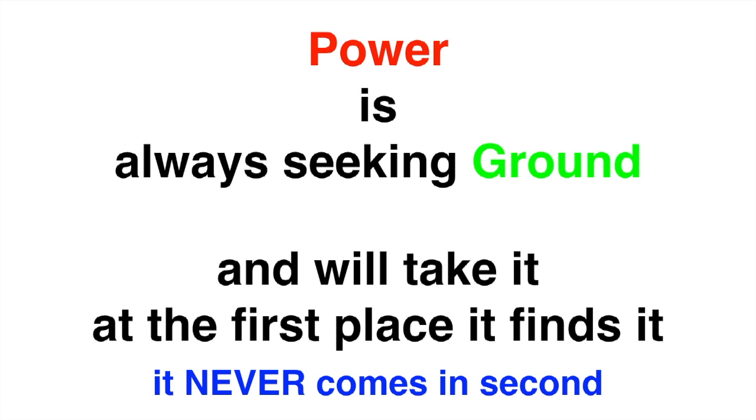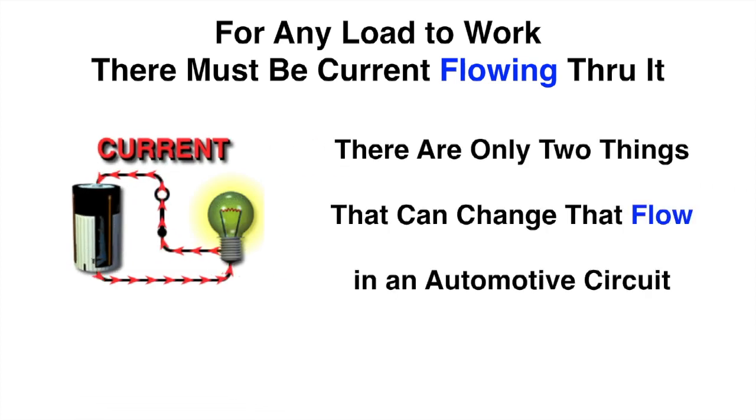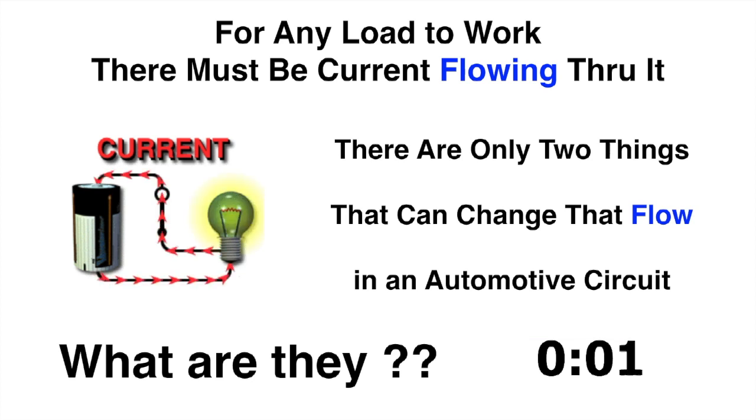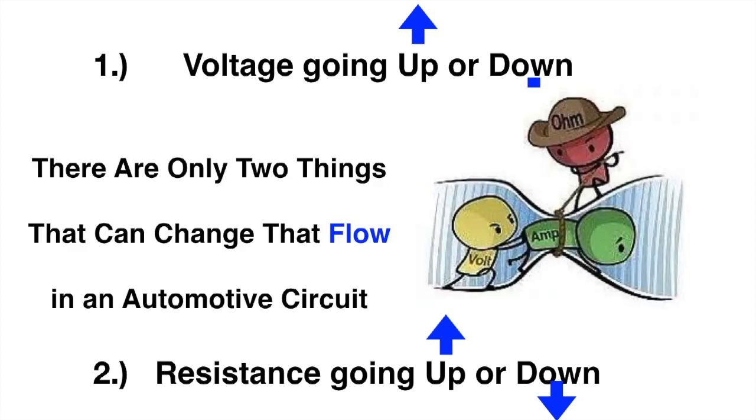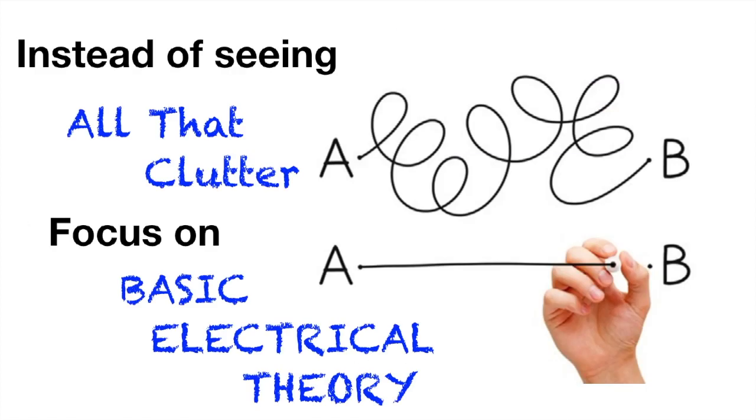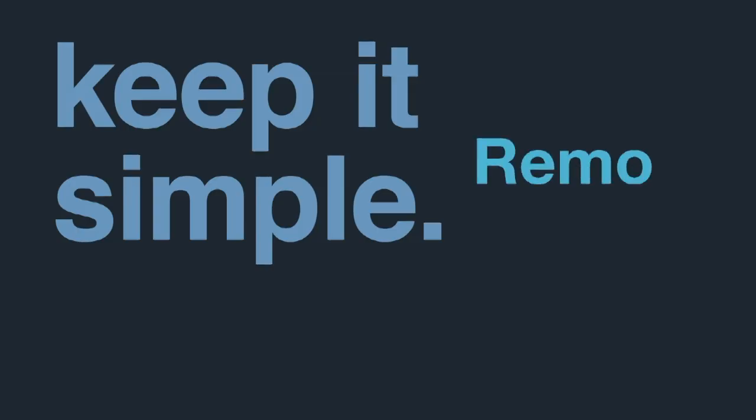Now for any load to work there must be current flowing through it, right? There are only two things that can change that current flow in an automotive circuit. What are they? Voltage going up or down will change it or resistance going up or down will change it. These are the two things that can change that flow. Either the changing in the push, the voltage, or the change in the resistance. So voltage going up or down, the push going up or down will have a direct effect on the flow and the resistance also will have a direct effect on how much flow can be pushed. So instead of seeing all that clutter, let's focus on the basic electrical theory and that's really pretty simple. Remove the clutter.